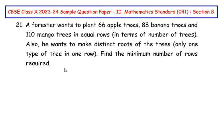Now this question is from the real numbers chapter. A forester wants to plant 66 apple trees, 88 banana trees and 110 mango trees in equal rows in terms of number of trees. Also he wants to make distinct roots of the trees, only one type of tree in one row. Find the minimum number of rows required.